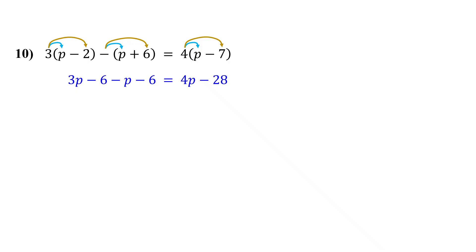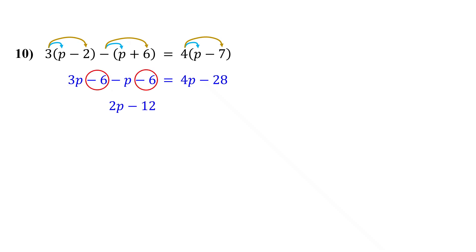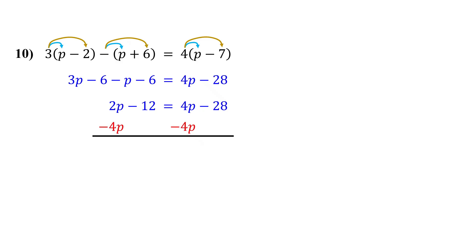Notice there are like terms on the left side. So next, combine them. 3p minus p is 2p, and negative 6 minus 6 is negative 12. Next, collect the variables on one side — collect them on the left by subtracting 4p from both sides. On the left, 2p minus 4p gives us negative 2p. On the right, these cancel out, leaving negative 28.